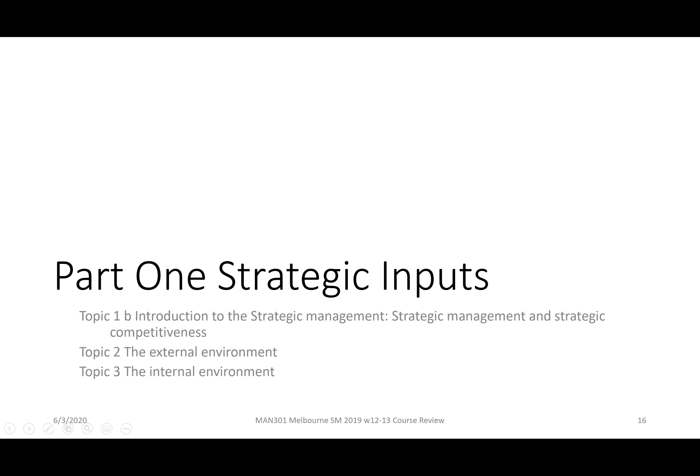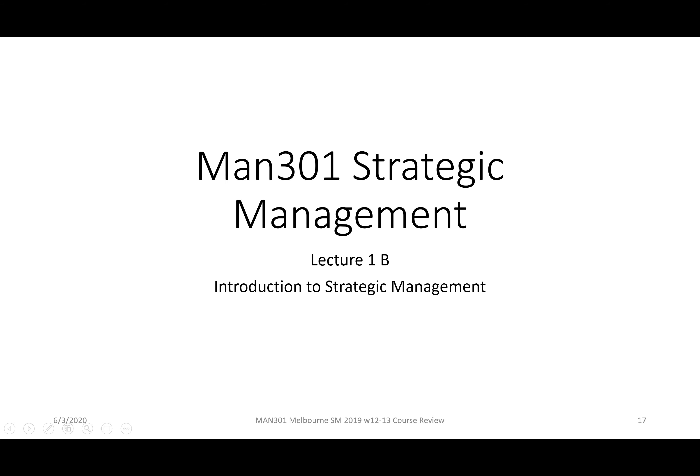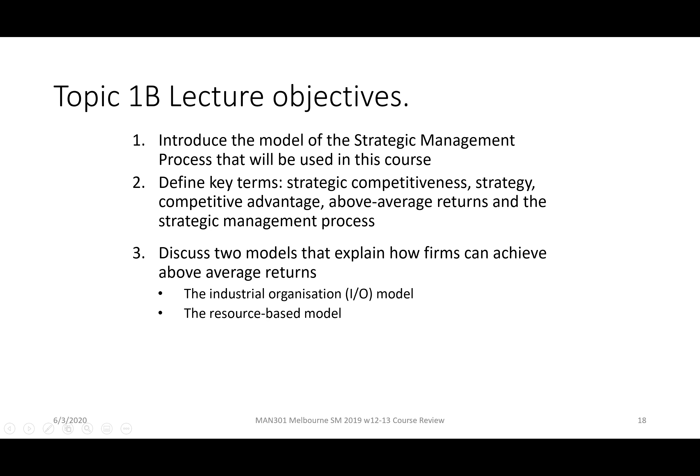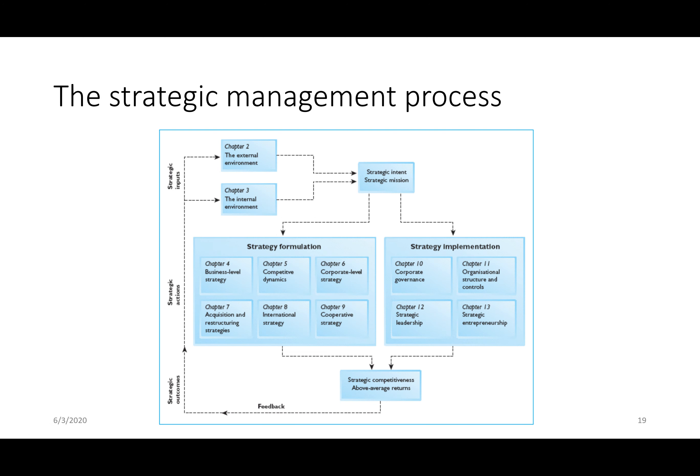Quite important to our discussion of Topic 1 was the strategic management process, but we also defined some key terms: strategic competitiveness, strategy itself, competitive advantage, above average returns, and the strategic management process. We discussed two models that explain how firms achieve above average returns — the industrial organization model and the resource-based model. For most of the course we focused on the resource-based view, though both the external focus on the environment and the internal focus on the resources of the company were important.